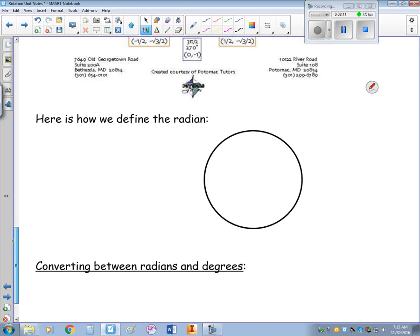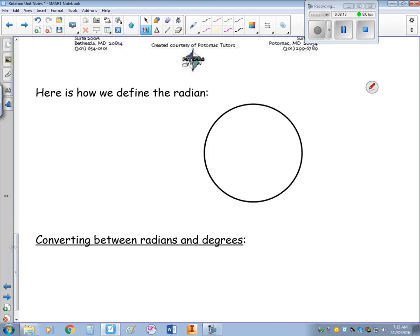When we go to define what a radian is, we define a radian as being arc length divided by radius.